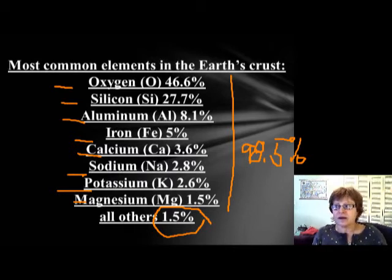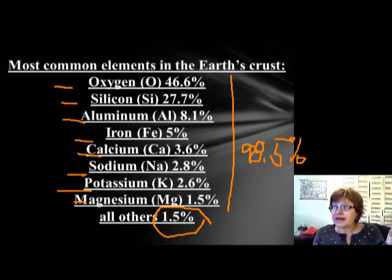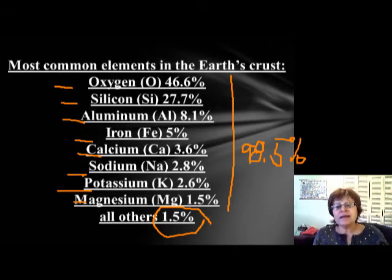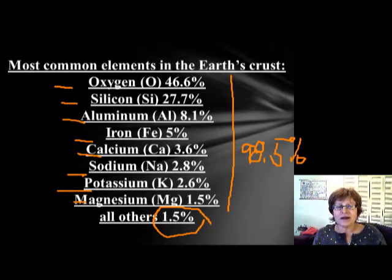My son works for Alcoa, one of the biggest aluminum companies in the world, and it's the same with aluminum price — it goes up and down, making the company very prosperous or struggling. Right now the aluminum price is really low, so the company is struggling, but hopefully it will come back up.